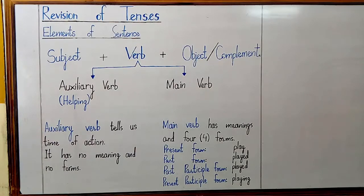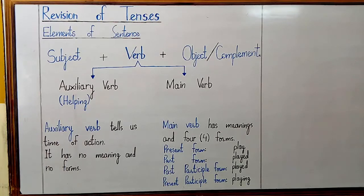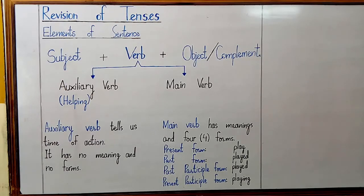Auxiliary verb tells us time of action but has no meaning and no forms of its own. On the other hand, main verb has meanings and four forms: present form, past form, past participle form, and present participle form. Present form is also called first form, past form the second form, past participle form the third form, and present participle form the fourth form.